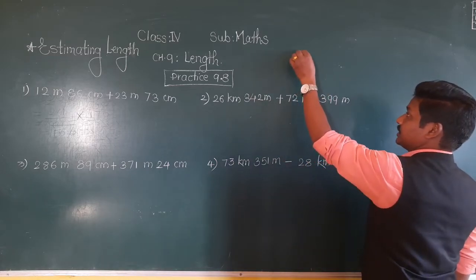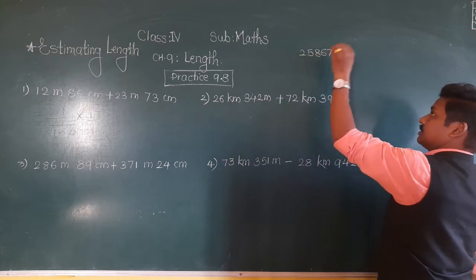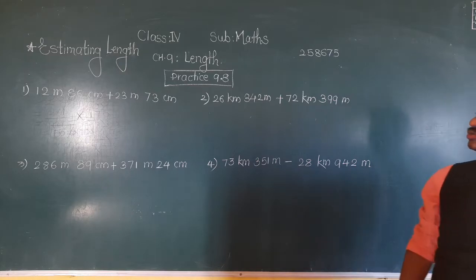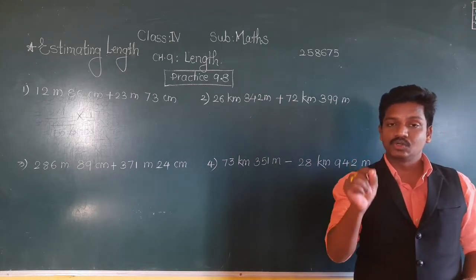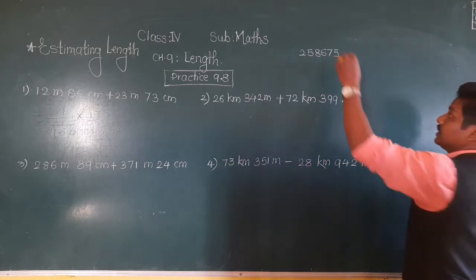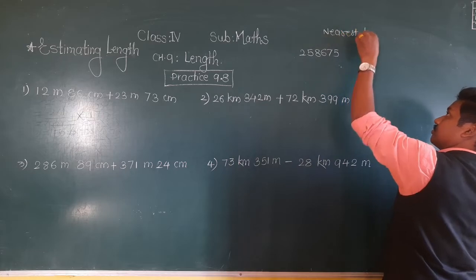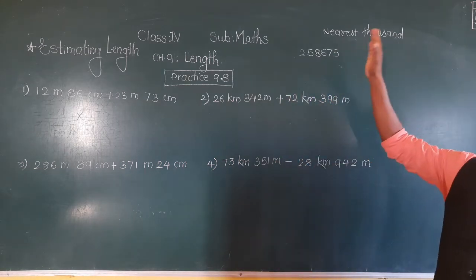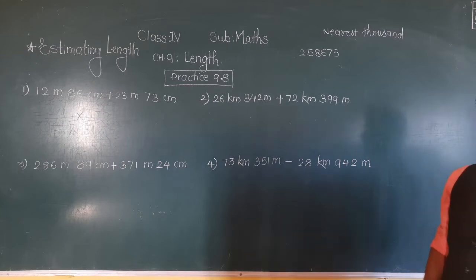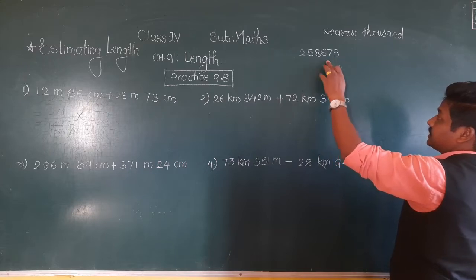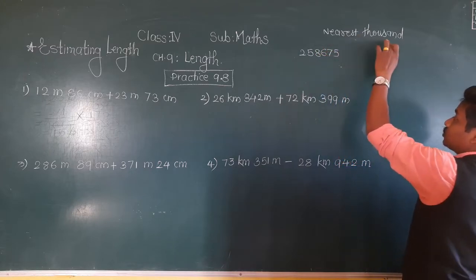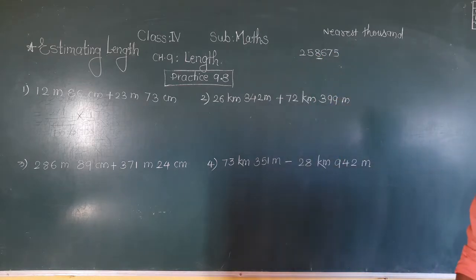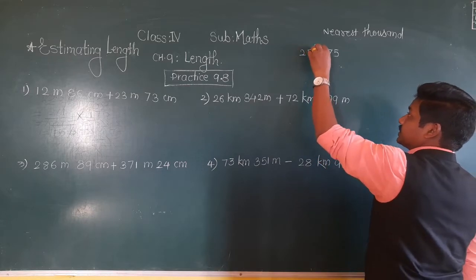For example, the given number is 258675. In this number 258675, if we want to round off to the nearest thousand, let us revise first. We underline the digit at the thousands place — ones, tens, hundreds, thousands — so eight is the digit at the thousands place. We circle that.